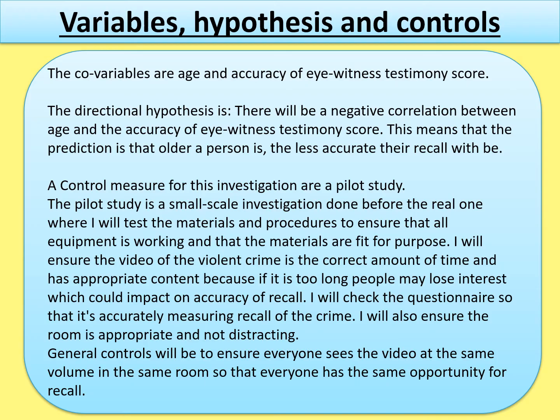For controls, a really good control measure for correlations — and any investigation — is a pilot study. You would say: 'A control measure for this investigation is a pilot study,' then explain: a pilot study is a small-scale investigation done before the real one where you test materials and procedures to ensure all equipment is working and materials are fit for purpose. For example, ensure the video of the violent crime is the correct length and has appropriate content, check the questionnaire is accurately measuring recall, and ensure the room is not distracting.